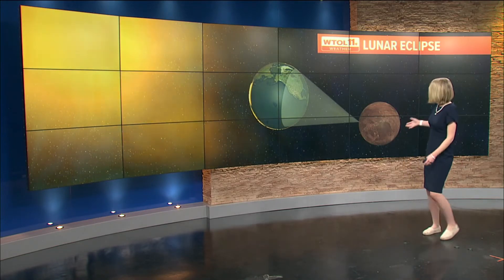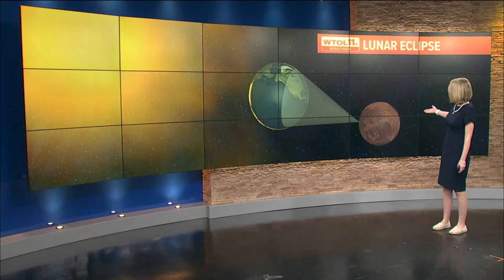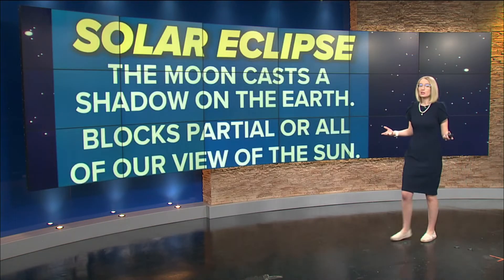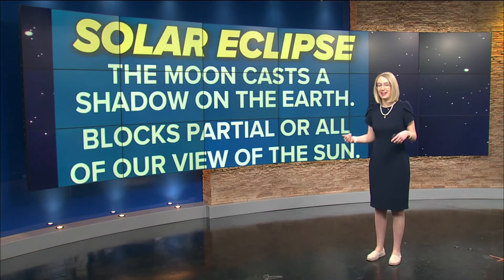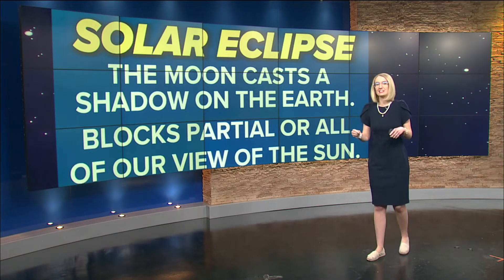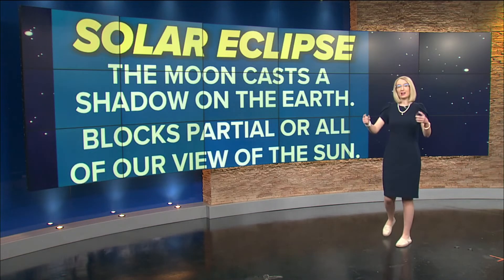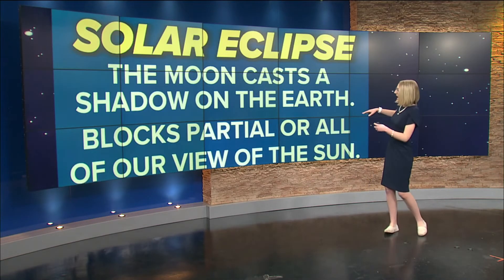At times, the moon might appear to have a little bit of a reddish hue during a lunar eclipse. On the other hand, the other type is a solar eclipse, and this is where the moon is now casting the shadow onto the earth.